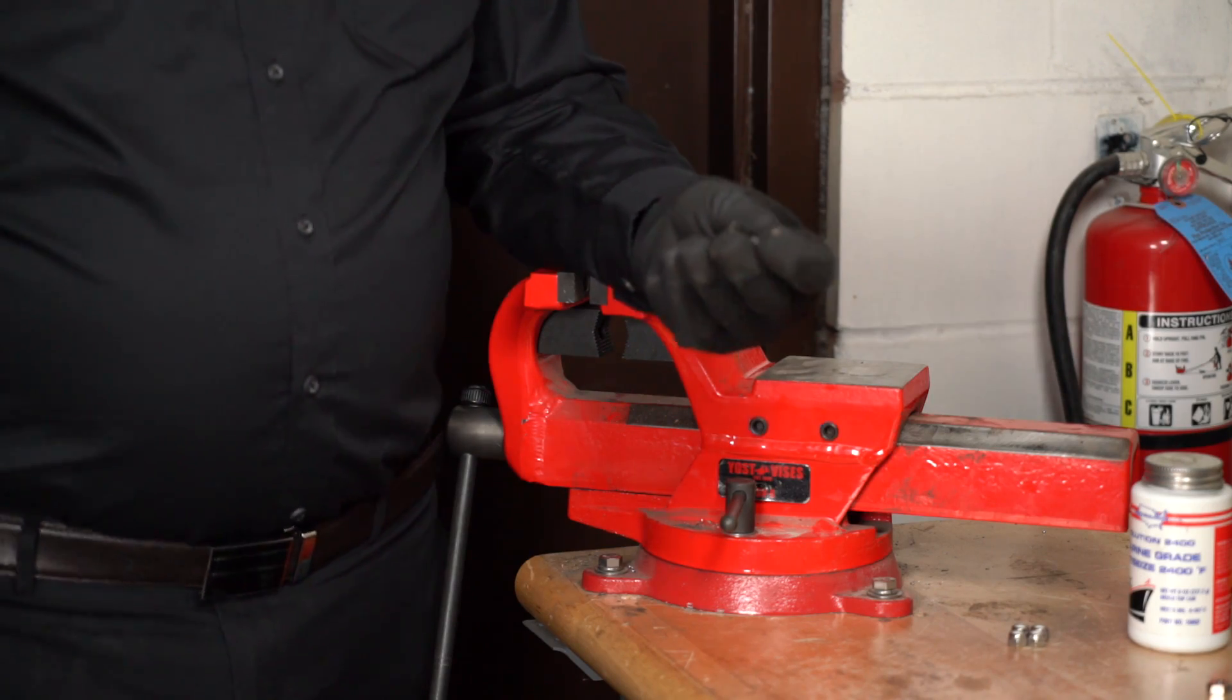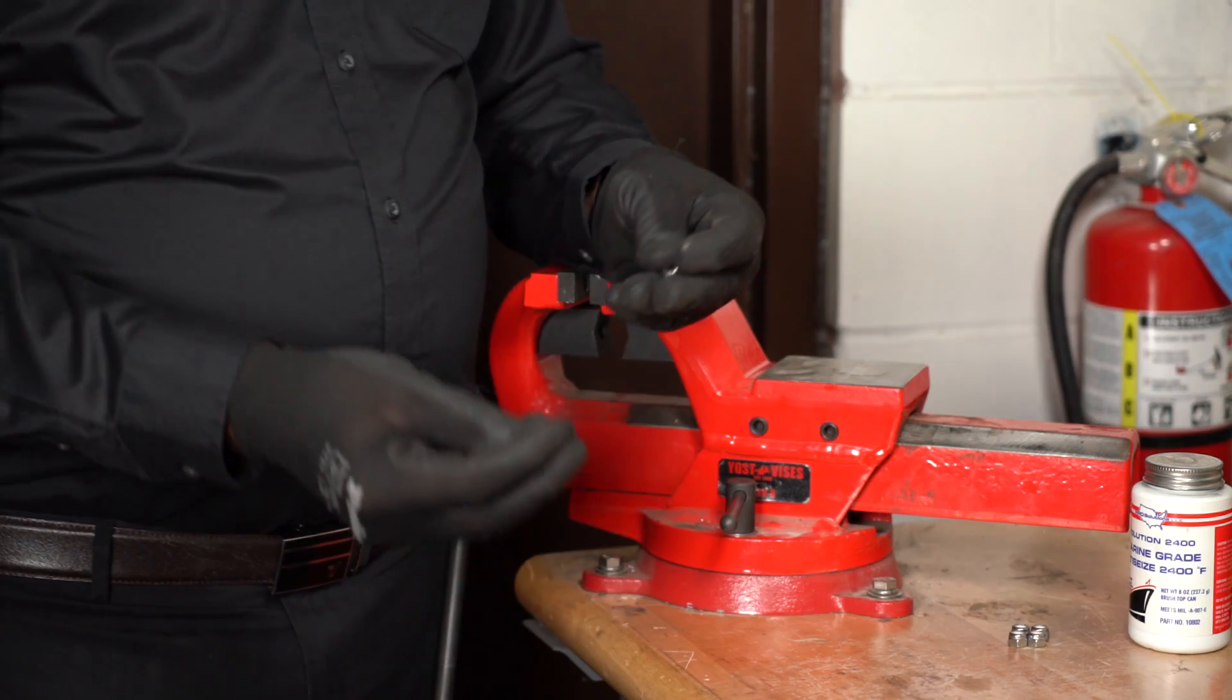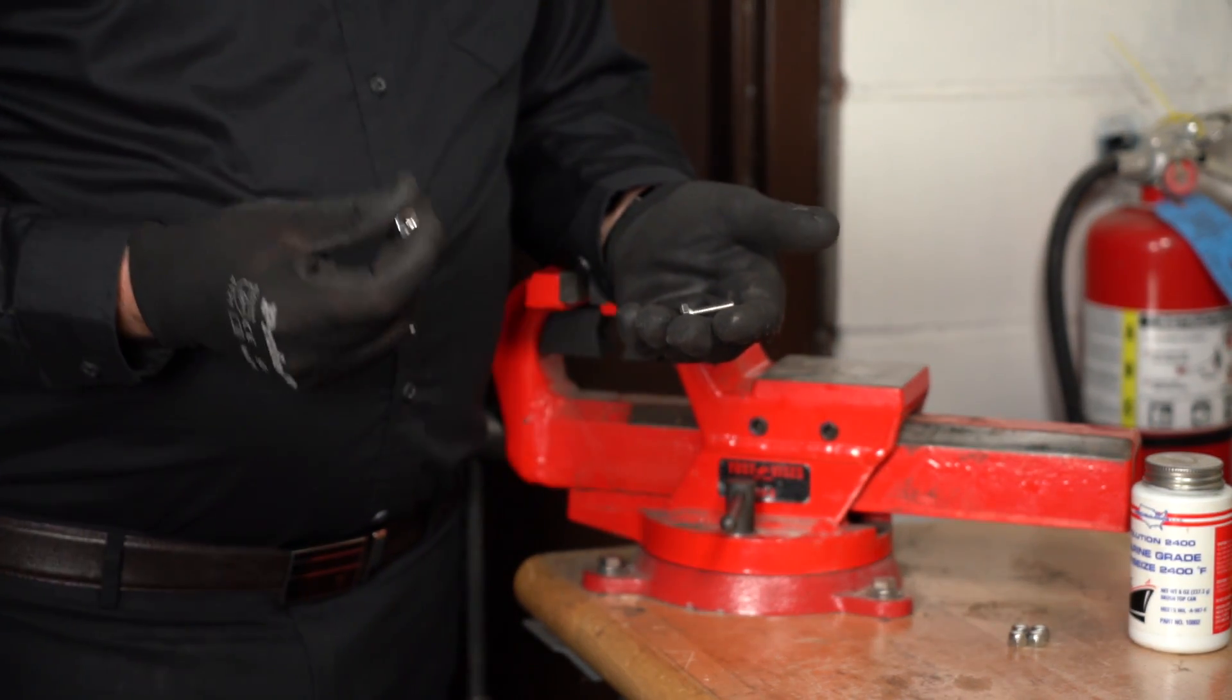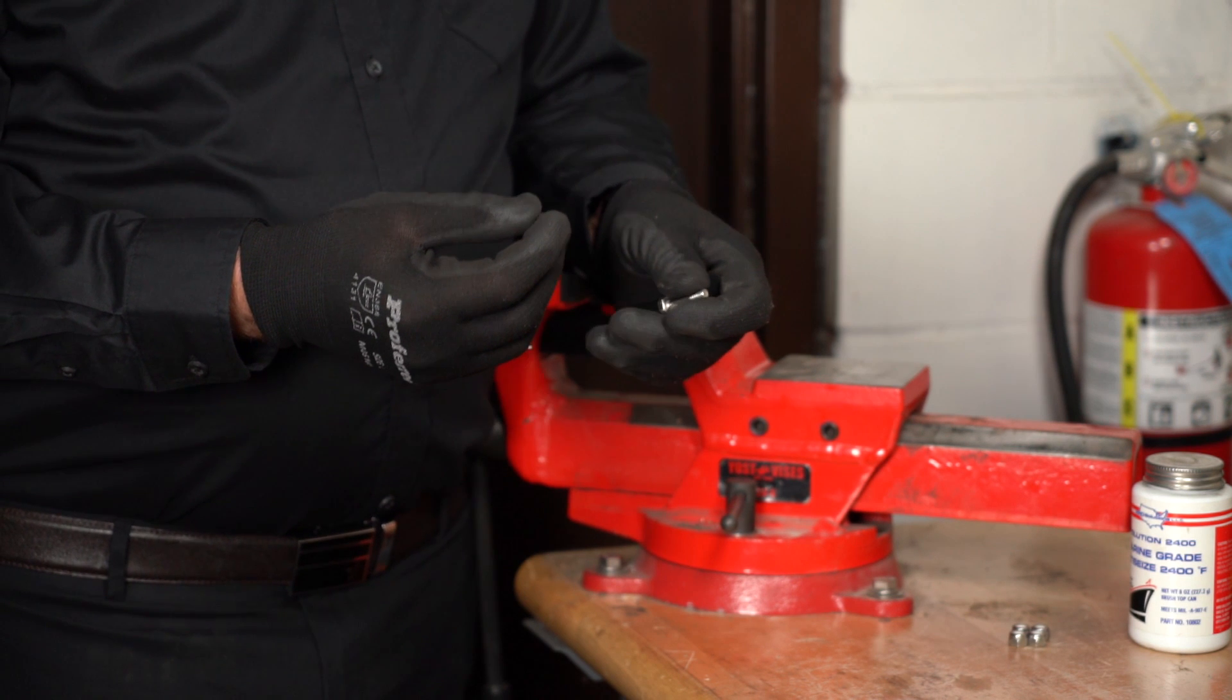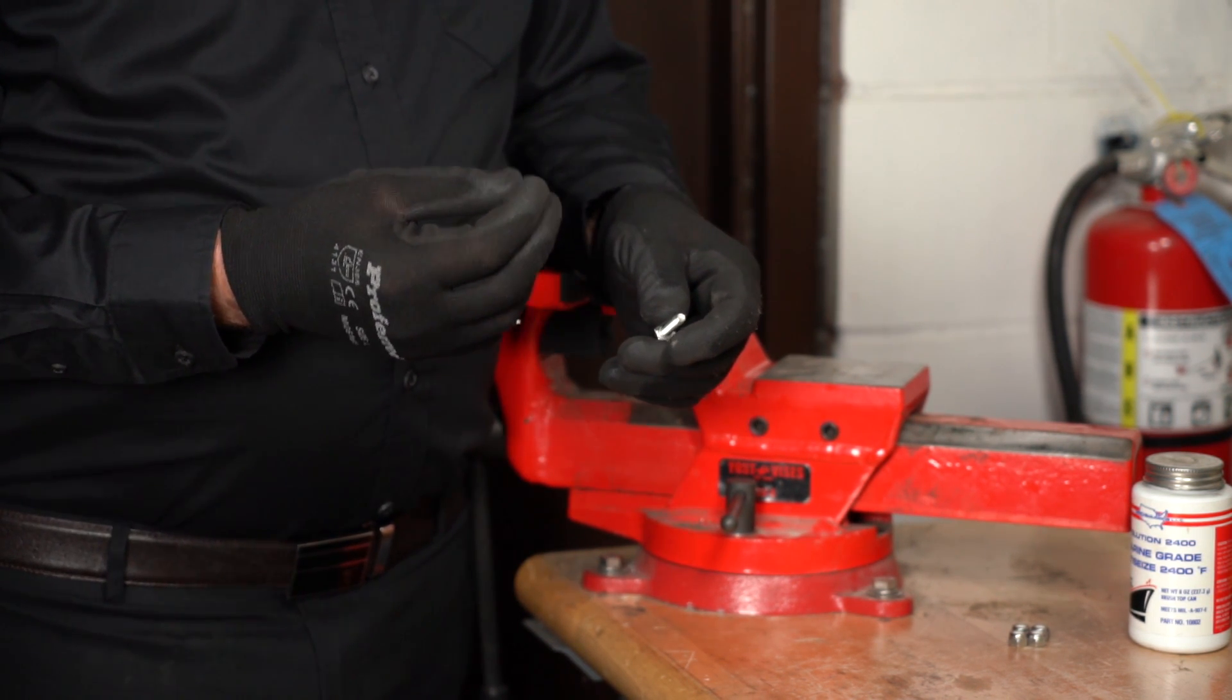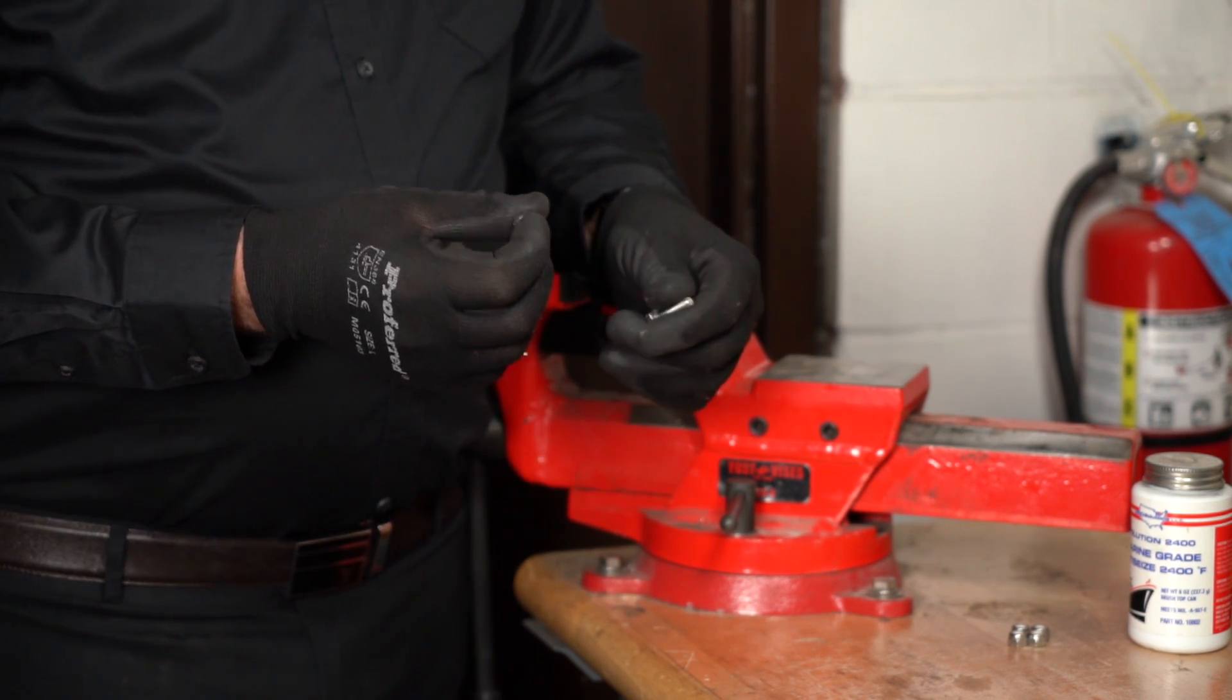I have here a hex cap screw and a finished nut. Hex cap screws in general are rolled threads and nuts are cut threads. When you cut threads, the difference is that you get more fiber on the threads, metal fibers.